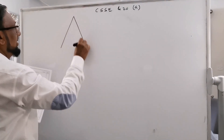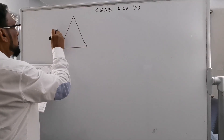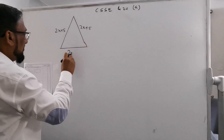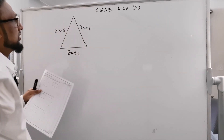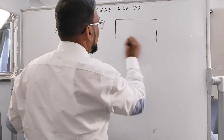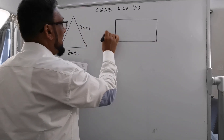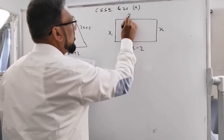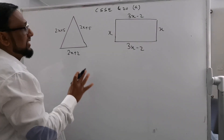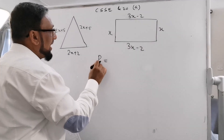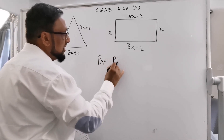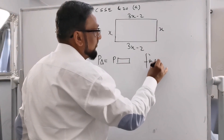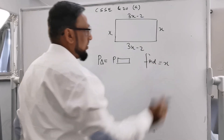For Part A, there is a triangle with side values 2x plus 5, 2x plus 5, and 2x plus 2. And there is a rectangle with side values x, x, 3x minus 2, and 3x minus 2. The examiner says the perimeter of the triangle equals the perimeter of the rectangle — find the value of x.